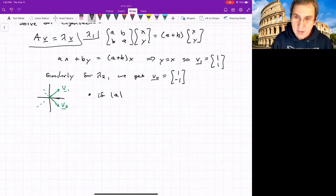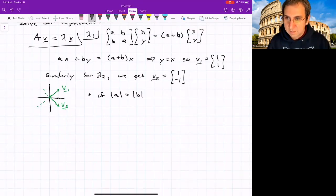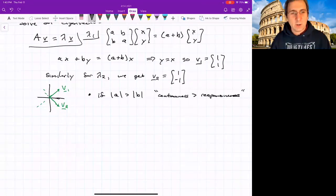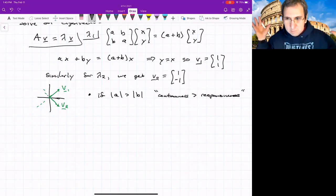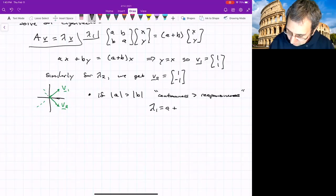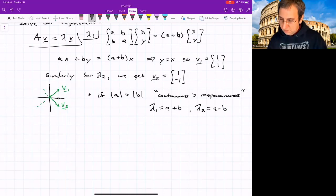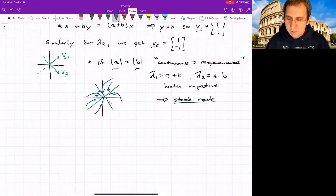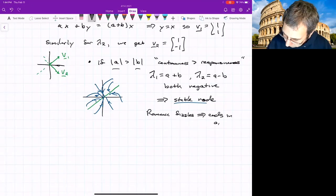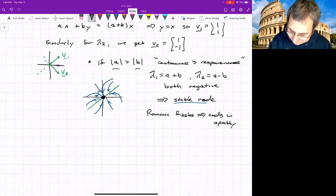If the magnitude of A is greater than the magnitude of B, that means cautiousness is greater than responsiveness. I would guess this is going to end in just going to 0, 0. Remember, lambda 1 is A plus B, and lambda 2 is A minus B. So for this case, they're both negative. So we have a stable node. What will it look like? Everything goes to 0 in a certain way. The romance fizzles no matter where you start. Everything ends in apathy. Apathy, I guess, is what we're calling the fixed point.